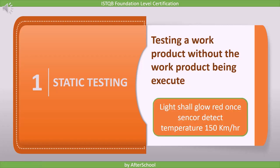Here's a simple example. Suppose this is a requirement: 'Light shall glow red when sensor detects 150 kilometer per hour.' I'm sure you found the defects — first, the spelling of 'sensor' is wrong, and the unit of temperature is mentioned as 'kilometer per hour' instead of 'degree.' We found these defects just by reading the requirement. Such type of testing is called static testing, defined as testing a work product without the work product being executed.